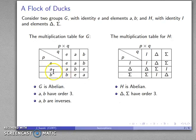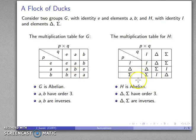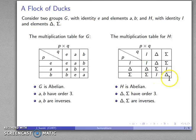It's also worth noting that A and B are inverses: A times B gives you the identity, and B times A gives you the identity. Likewise in our other group, delta and sigma are inverses. Delta times sigma gives you the identity, and sigma times delta gives you the identity.